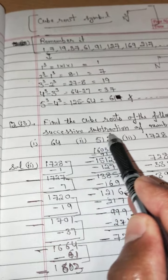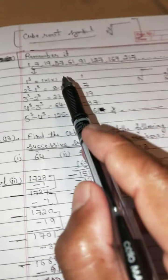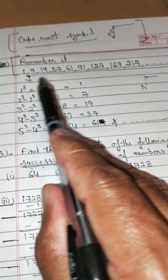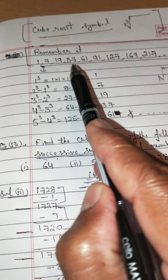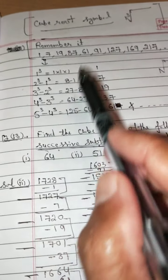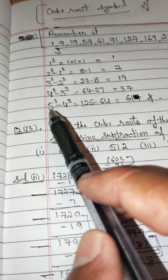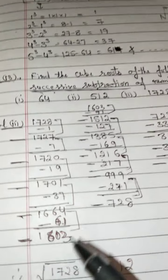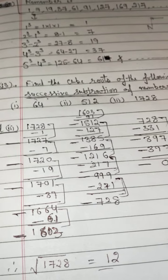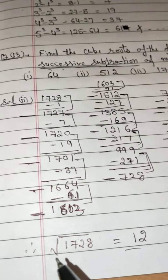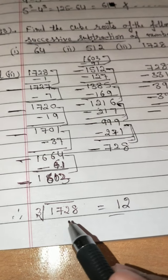Successive subtraction means you subtract the numbers which come in their place in the sequence. If you leave out one of the numbers, your sum will be wrong. Remember the sequence: 1, 7, 19, 37, 61, 91 and so on. These numbers come from the perfect cube property: 1³=1, 2³−1³, 3³−2³, 4³−3³, 5³−4³ and so on. The last subtraction gives remainder 0 after 12 steps. Cube root of 1728 = 12.